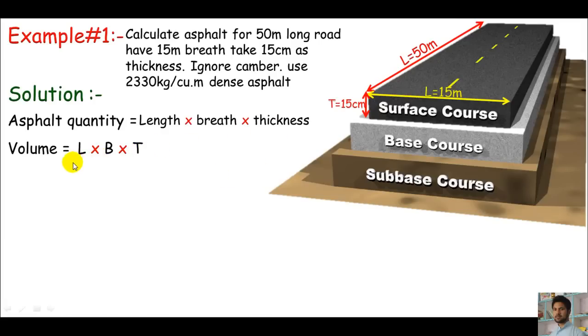When I plug and check in this equation, I must get volume equals L which is 50 times breadth which is 15 meter times thickness which is 15 cm, meaning 0.15 meter. Just divide 15 by 100 which will convert centimeters into meter. So do a little mathematics with this, you must get 112.5 cubic meter asphalt. This is the volume of this surface layer. This is the quantity of asphalt, but this is in volume.